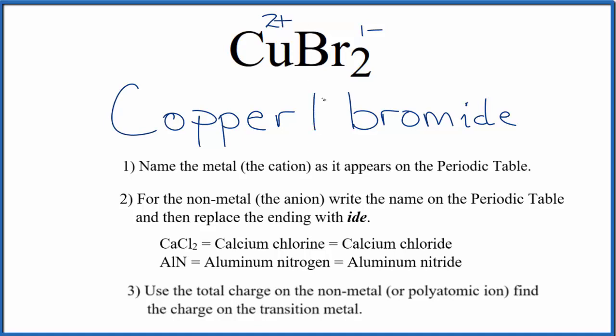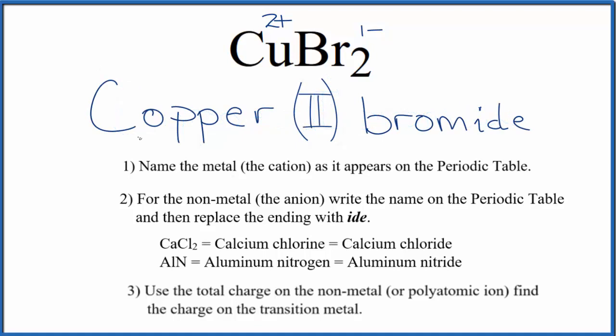So we'll write a Roman numeral two in parentheses in the name. So that makes the name for CuBr2, copper two bromide. We have the two here because of the two on the copper.